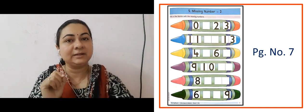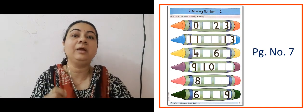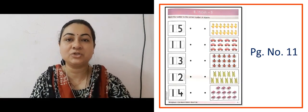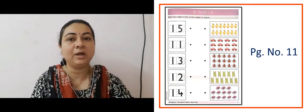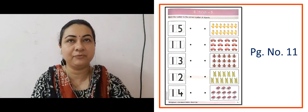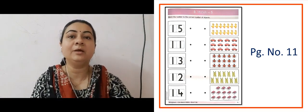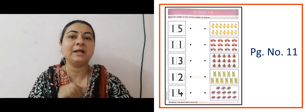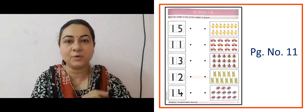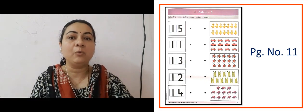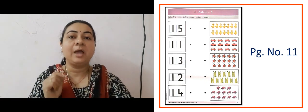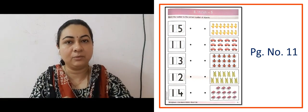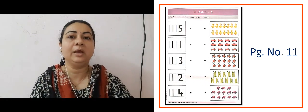The next slide is showing us page number 111, here Match Number 5. Some numbers are given on the left side and some objects are given on the right side. What we did is we counted the number of objects and matched them with the correct number. Please revise this.